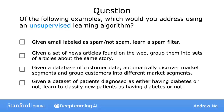Maybe you remember the spam filtering problem. If you have labeled data — labeled as spam or non-spam email — you can treat this as a supervised learning problem. The second example, the news story example, is exactly the Google News clustering example from the last video. You can approach that using a clustering algorithm to group news articles together, so that would use unsupervised learning.